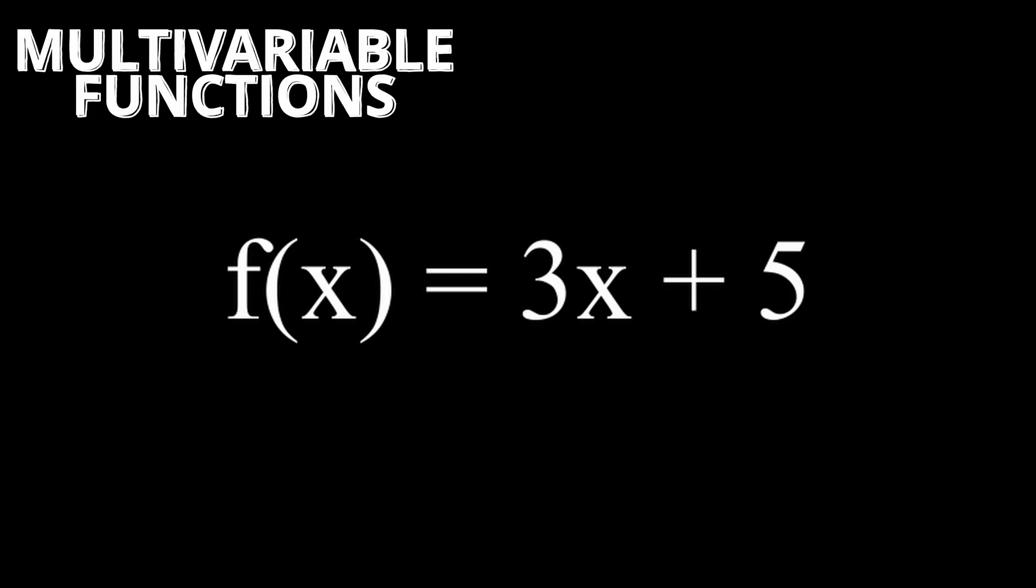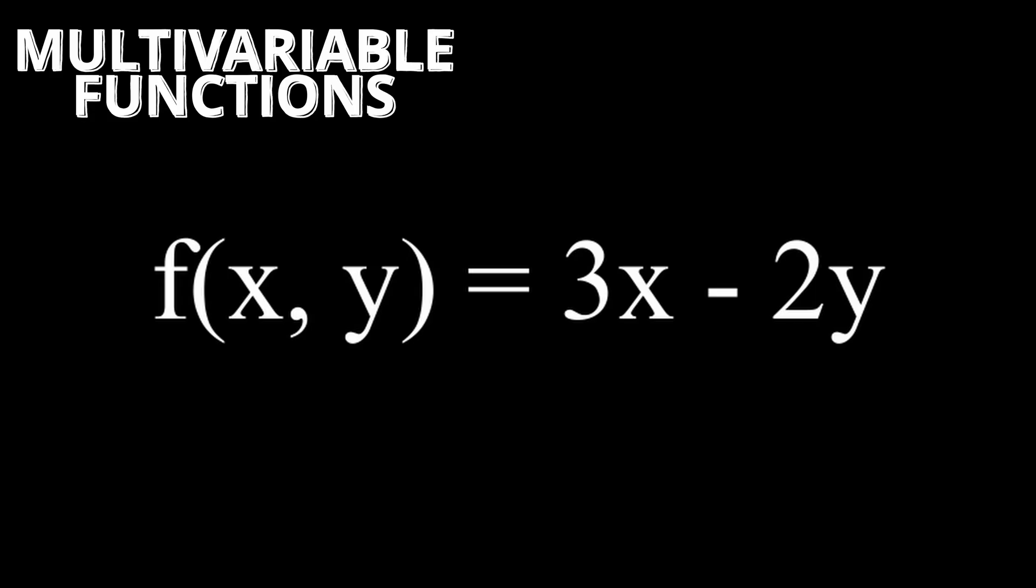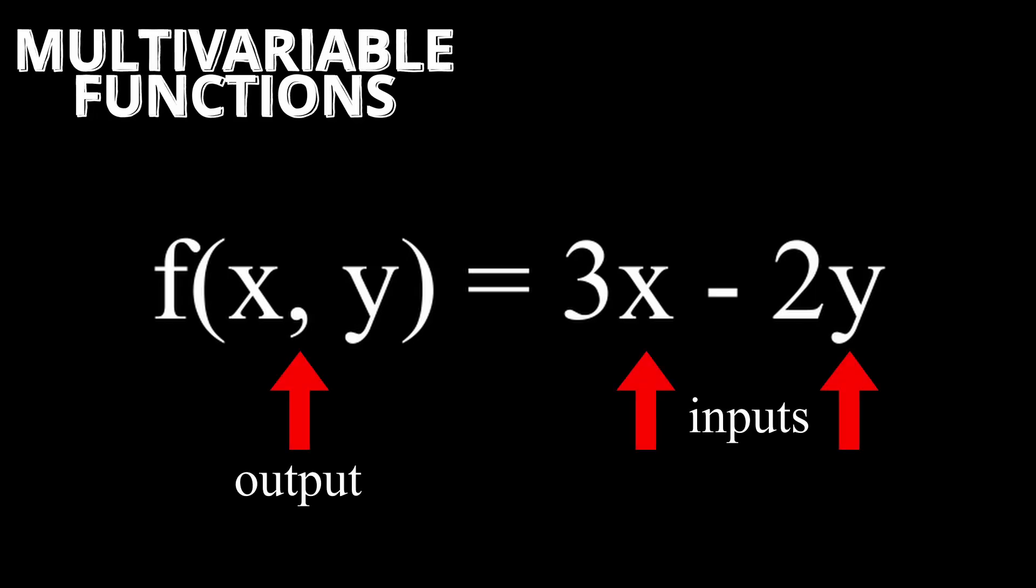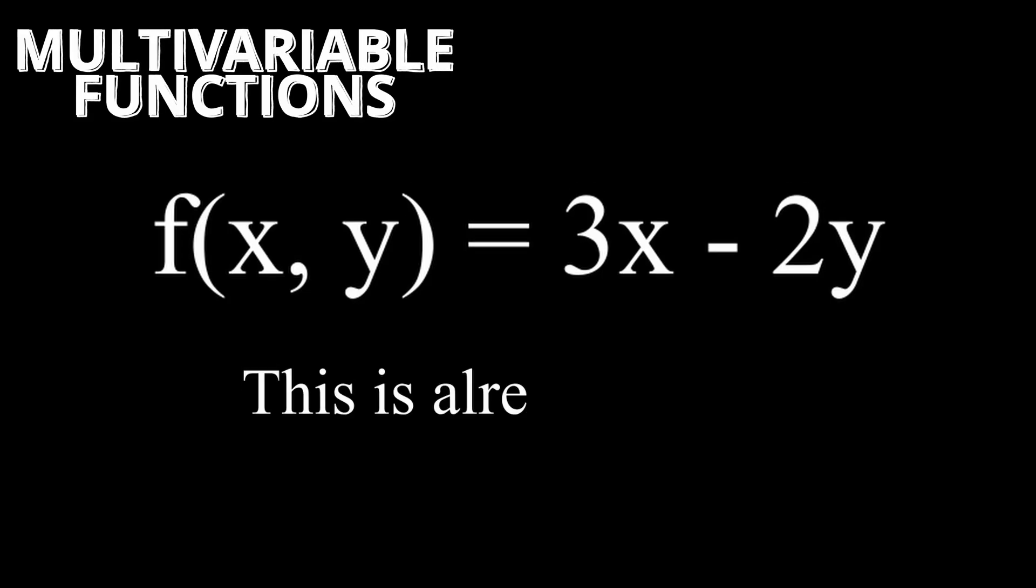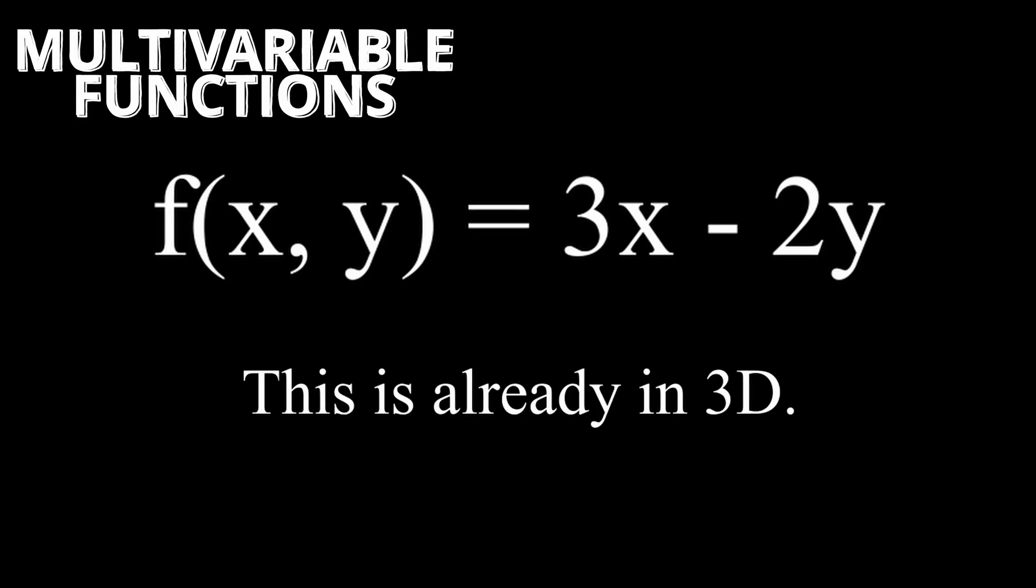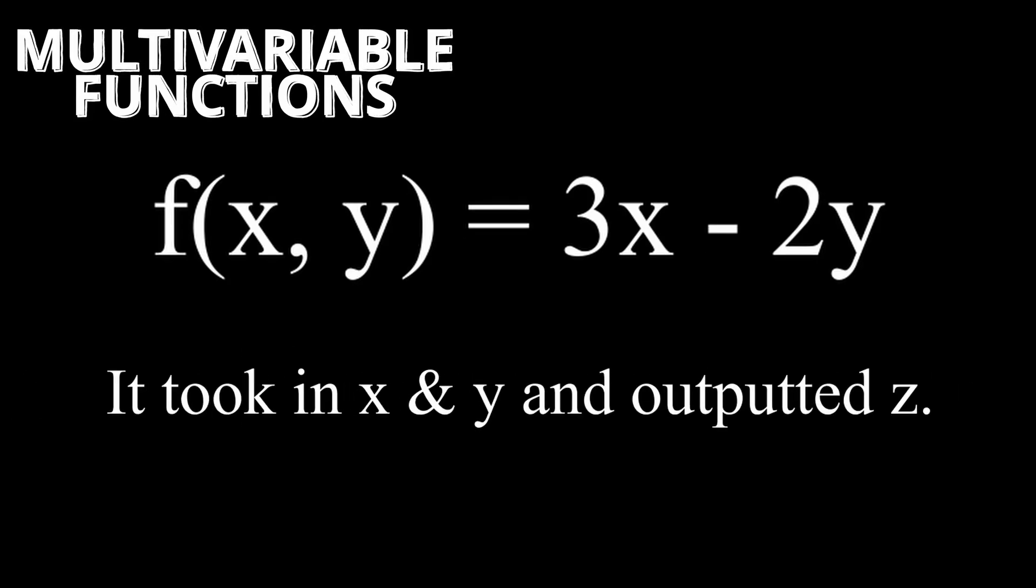Multivariable functions. In 2D, functions take in an x input and output a certain value. On the other hand, multivariable functions take in multiple inputs and output a certain value. For example, in 3D, functions take in an x and y value and output a z value.